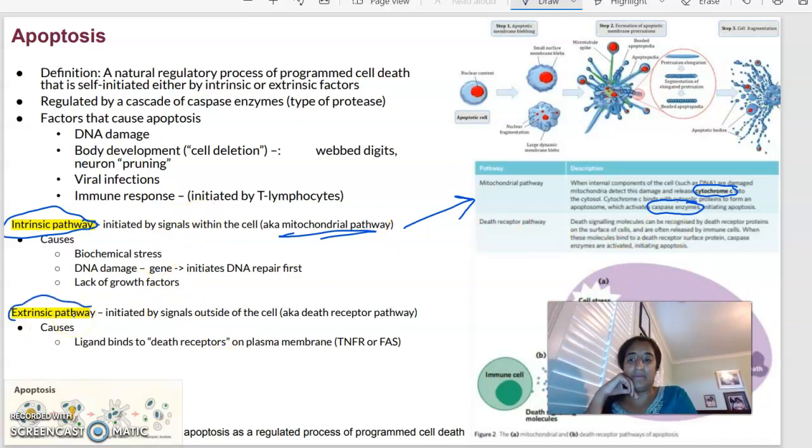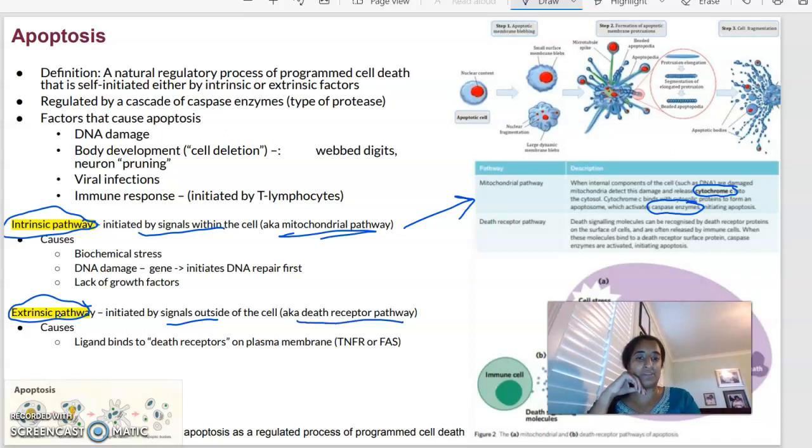The extrinsic pathway is initiated by signals outside of the cell compared to inside of the cell for intrinsic. And we call this the death receptor pathway. So basically what's happening here is death signaling molecules are going to be recognized by death receptor proteins on the surface of cells. And they're going to be released by immune cells. So when these molecules bind to death receptor proteins, those caspase enzymes are going to be activated, and they're going to initiate apoptosis. So hopefully you can see that the caspase enzymes, once they're released, is what is initiating apoptosis.